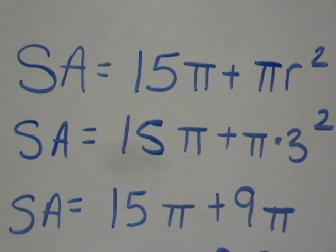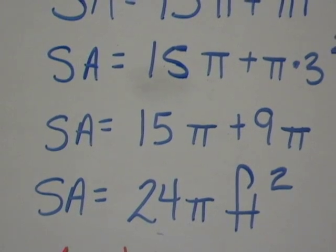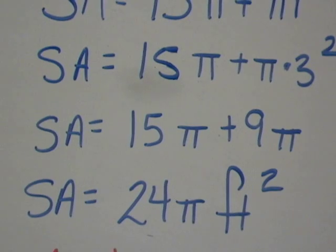Those both have pi. We can add them together. So our final total surface area is 24 pi feet squared. Again, it's squared because it's an area.